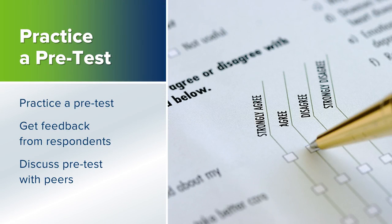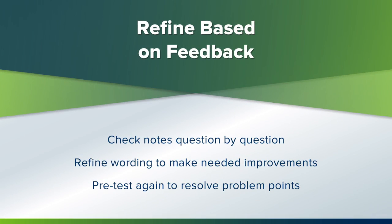Now you're ready to pre-test your survey in a practice activity. After you do the pre-test, you can get feedback from the respondents and discuss this with your peers. Here's how you would refine the survey based on that feedback: one, go through all the questions and check what each person said when they were filling out the survey; two, make changes to the questions that need content adjustments; three, pre-test again to make sure you have taken care of each and every problem. That's it for this lesson. Now you should be able to pre-test the questionnaire with a representative sample of respondents and refine it based on the review of the results.